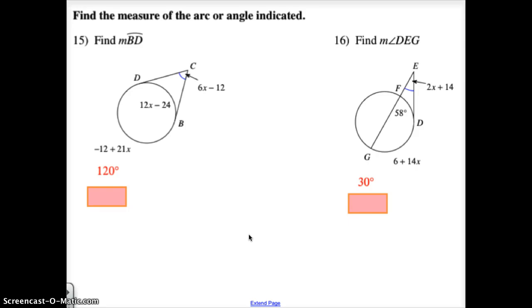If the vertex is on the circle, then the arc and the angle are half, the arc is double the angle and the angle is half of the arc. If the vertex of the angle that you're trying to find is inside the circle, we're going to add the two intercepted arcs and then divide by two.